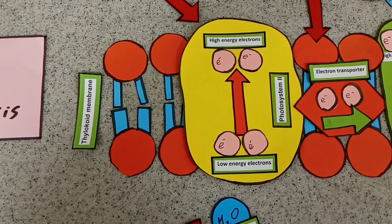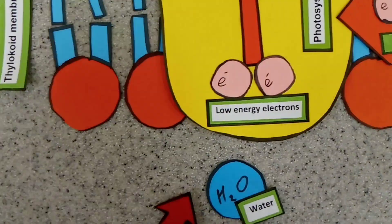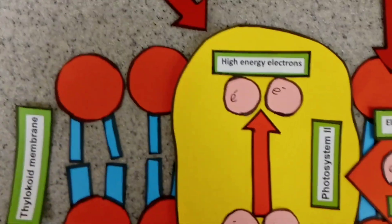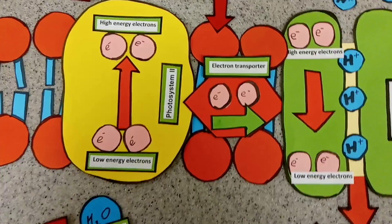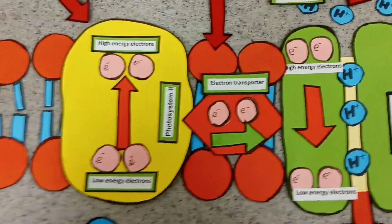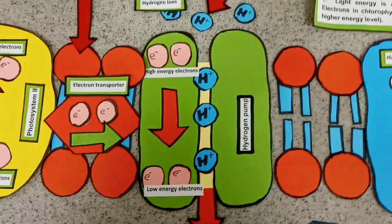Photosystem 2 uses light energy to raise those electrons from a low energy level to a high energy level. These electrons are then donated to an electron transporter which transports them to a hydrogen pump.